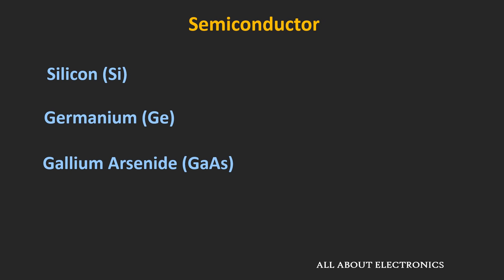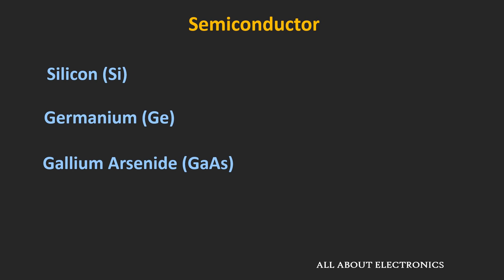We will understand the behavior of semiconductors by taking the example of silicon, which is extensively used in the electronic industry. The atomic number of silicon is 14, so its atomic structure has 14 protons and 14 electrons. The 14 protons reside in the nucleus and the 14 electrons rotate around it. Looking at the outermost orbit, silicon has four electrons — that is, silicon has four valence electrons.